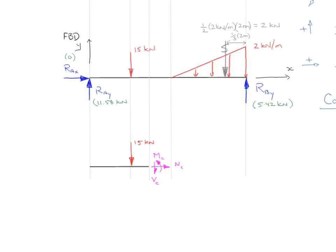And we also have our reaction at A. We have a single value which is our reaction at A of 11.58 kilonewtons. And this becomes our partial free body diagram which allows us to solve for the internal forces that occur on the section that we cut.